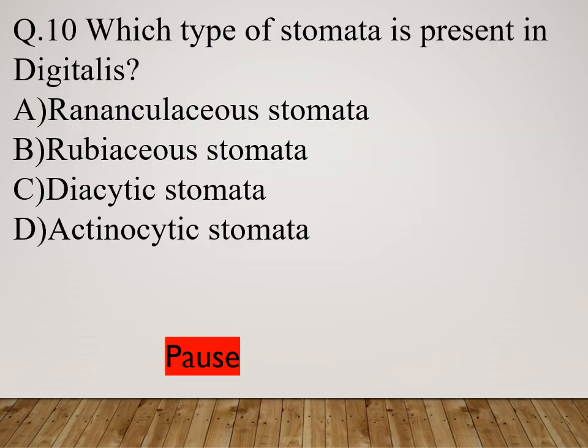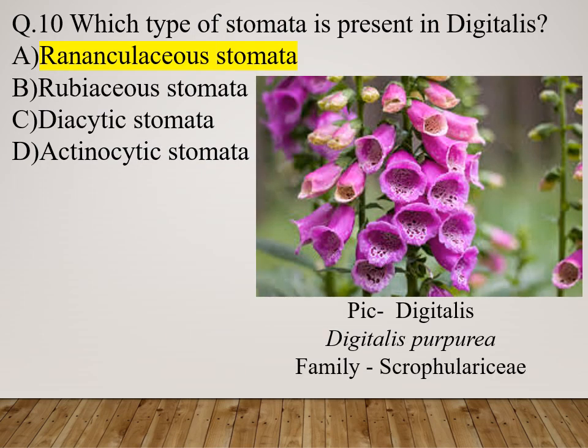Question 10: Which type of stomata is present in digitalis? Option A: Ranunculaceous stomata. Option B: Rubiaceae stomata. Option C: Diacytic stomata. Option D: Actinocytic stomata. The right answer is ranunculaceous stomata. The scientific name is Digitalis purpurea, family Scrophulariaceae; it is a very important drug.